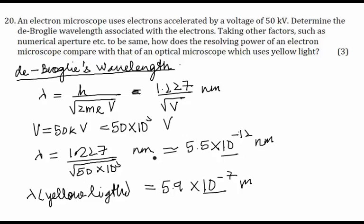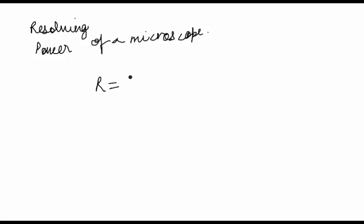But before that let me tell you what is the resolving power of a microscope. The resolving power of the microscope is inversely proportional to the wavelength because resolving power equals 2 mu sine theta by lambda. So R is inversely proportional to the wavelength of the radiation used.